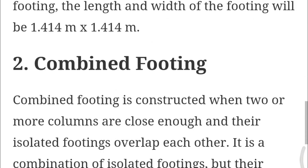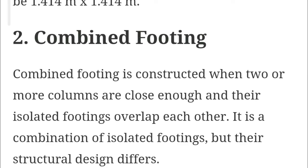The next type is combined footing. Combined footing is constructed when two or more columns are close enough that their isolated footings overlap each other. In that situation we go for combined footing. There are two types: rectangular combined footing and trapezoidal combined footing. Whenever the column sizes are the same, we use rectangular combined footing. If one column is larger and another is smaller, we go for trapezoidal combined footing in order to reduce the concrete area.